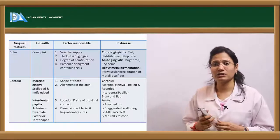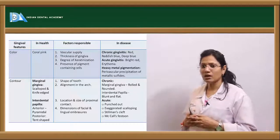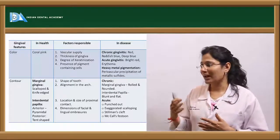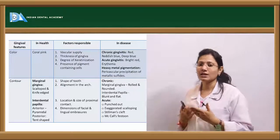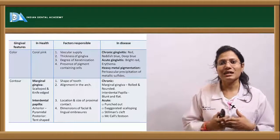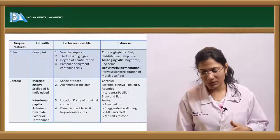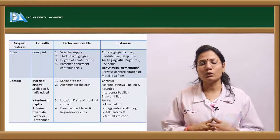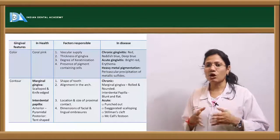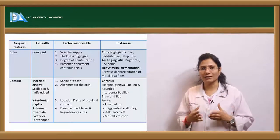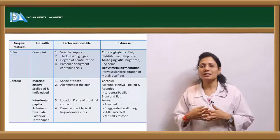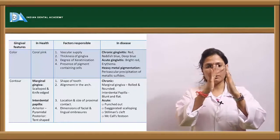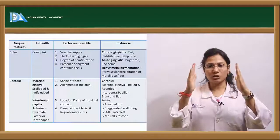Coming to the second category — contour. The normal contour of your gingiva: your marginal gingiva is always scalloped with knife-edged margins. Your interdental papilla in the anterior areas is pyramidal in shape, and in the posterior areas it is tent-shaped. It is pyramidal in the anterior areas because the point of contact there is a point contact, whereas in posterior areas the two teeth contact at a surface, giving a larger contact area. Your lingual and buccal papilla don't join as a pyramid but join via the interdental col as a tent.